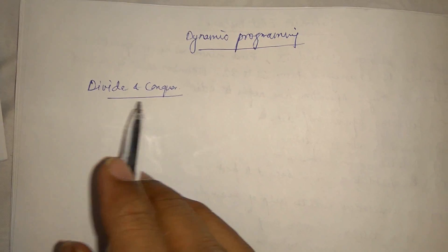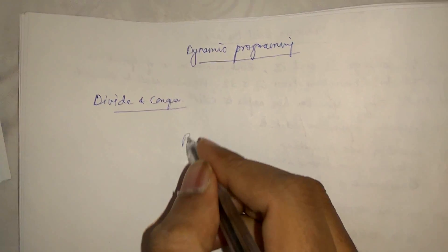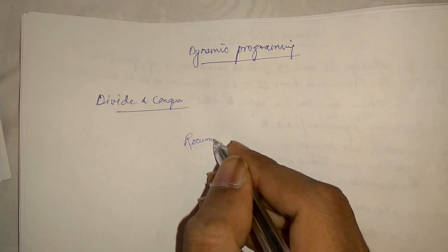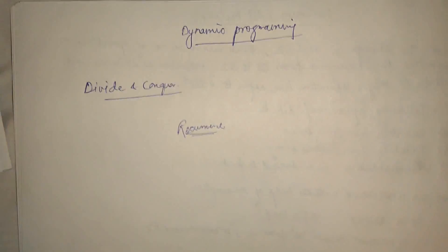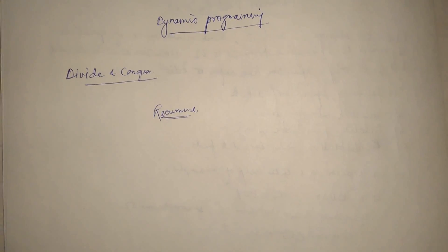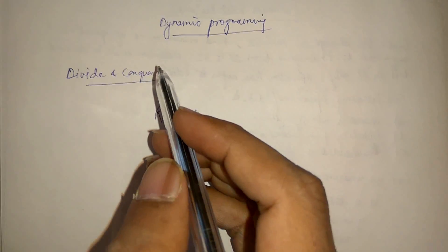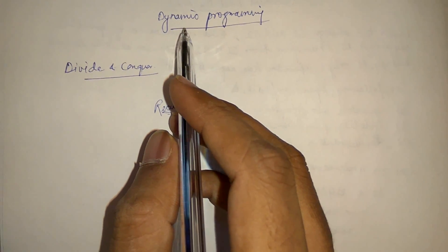So how do we proceed for divide and conquer? If you remember, we use recurrence for that. So in a similar fashion, we have a different approach called dynamic programming.